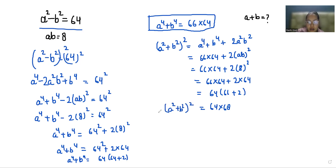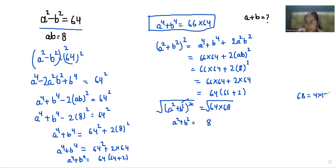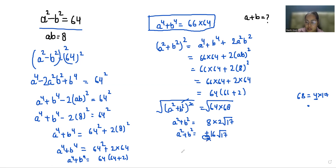So (a squared plus b squared) whole square equals 64 times 68. Now taking square root of both sides: 64 is 8 squared so 8 comes outside, and 68 gives 4 times 17, so the square root gives 2. That means a squared plus b squared equals plus or minus 16 root 17. Since a square plus b square cannot be negative, we reject the negative answer, so a squared plus b squared equals 16 root 17.